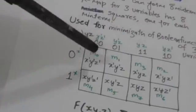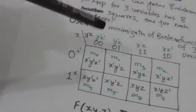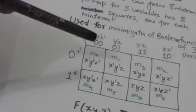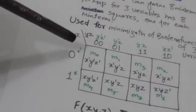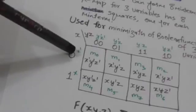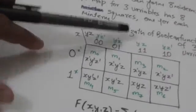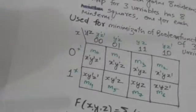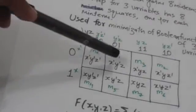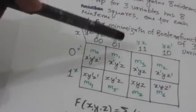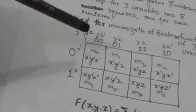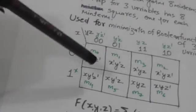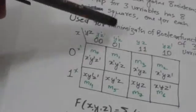The index number associated with the min term represented by a square can also be obtained the same way — by concatenating the number labeling the row with the number labeling the column. For this square, concatenating row label 0 with column label 01 gives 001, whose decimal value is 1. So it represents the min term M1.